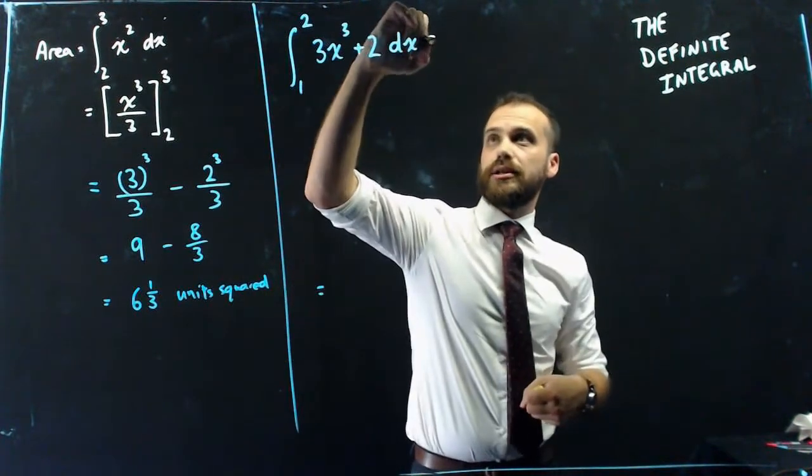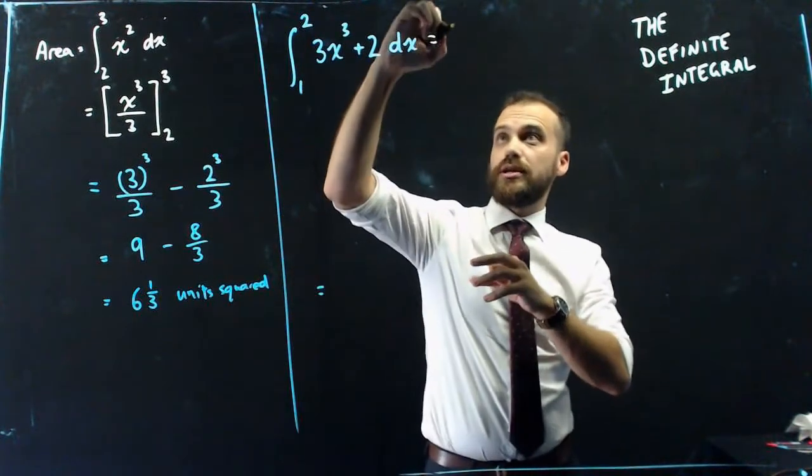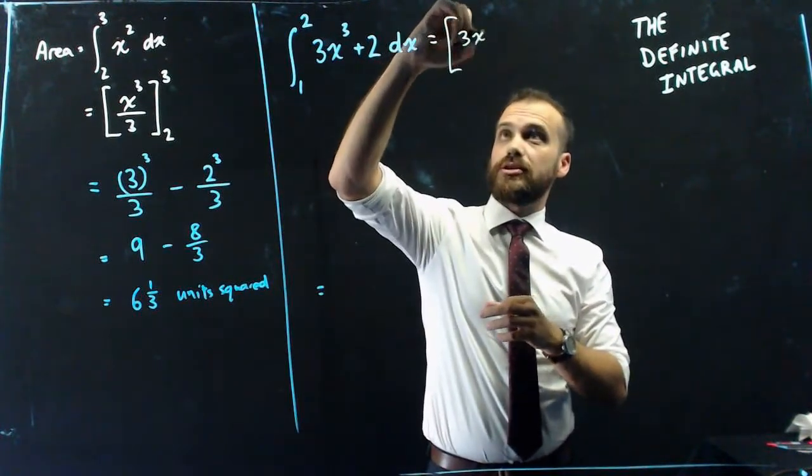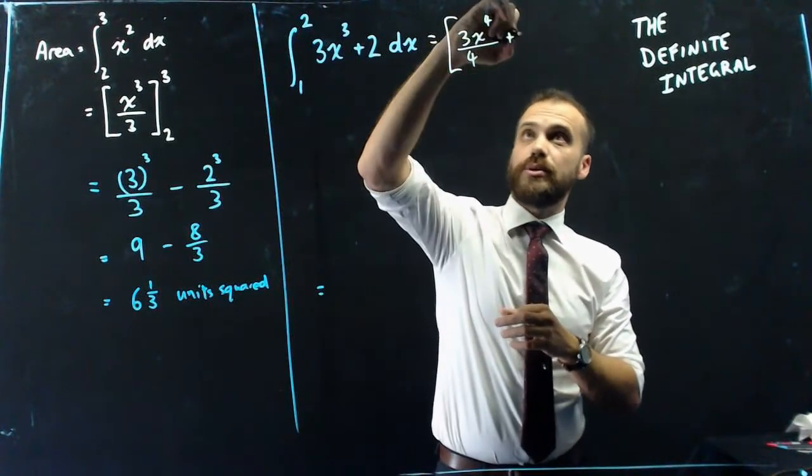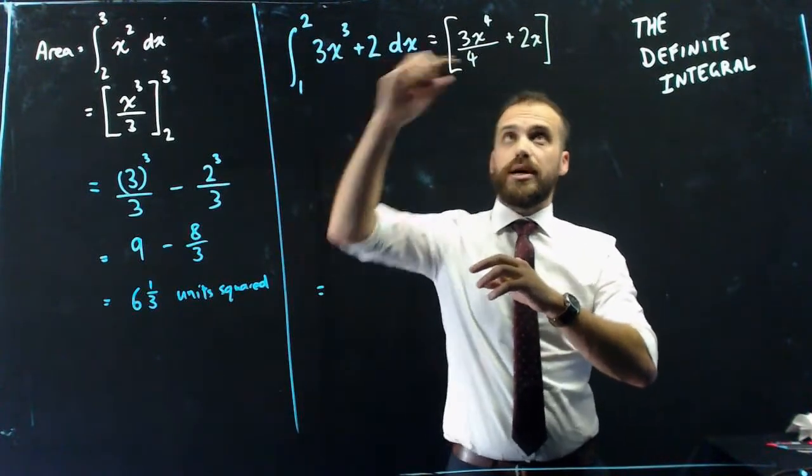Now, the first step is clear. If you want to find the definite integral of something, you need to find, first of all, the indefinite integral. So that's going to be 3x to the power of 4 over 4 plus 2x. And then on our brackets, we put our 2 and our 1.